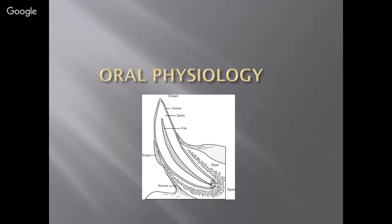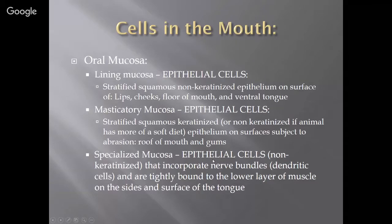Today we're talking about oral physiology — looking at the tooth and the mouth and everything that goes on within. For the cells in the mouth, the oral mucosa is a mucoid layer that covers the lips, cheeks, floor of your mouth, and ventral tongue. There is lining mucosa made up of epithelial cells.